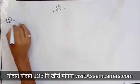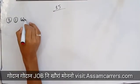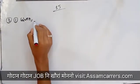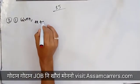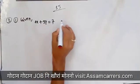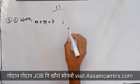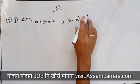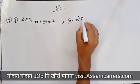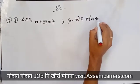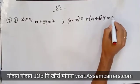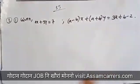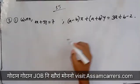Number 1 given: 2x plus 3y equal to 7, and (a minus b)x plus (a plus b)y equal to 3a plus b minus 2.